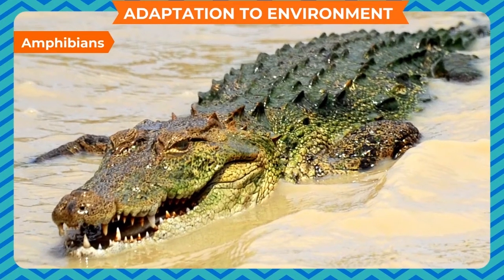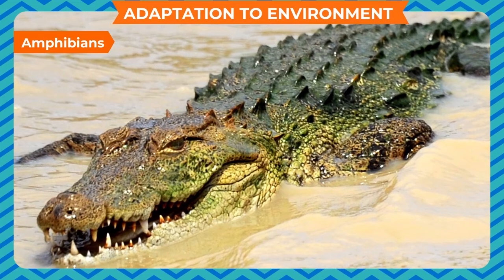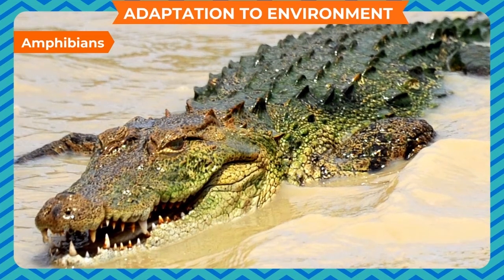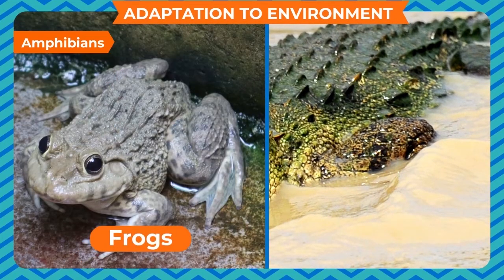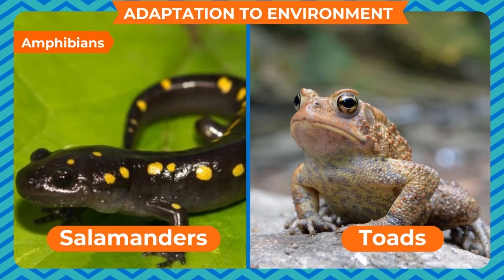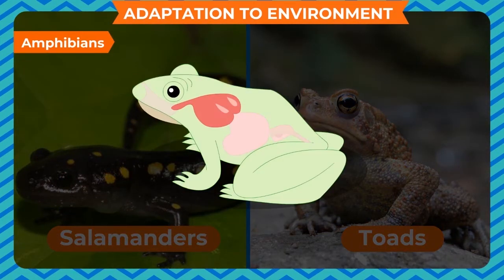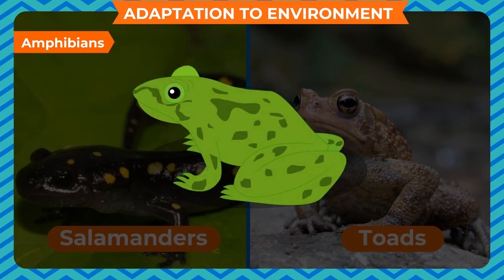Amphibians. Animals that can live both on land and in water are called amphibians. Frogs, newts, salamanders, toads, etc. are amphibians. These animals breathe on land through their lungs and through their moist skin in water. Their legs help them to move on land and to swim in water.